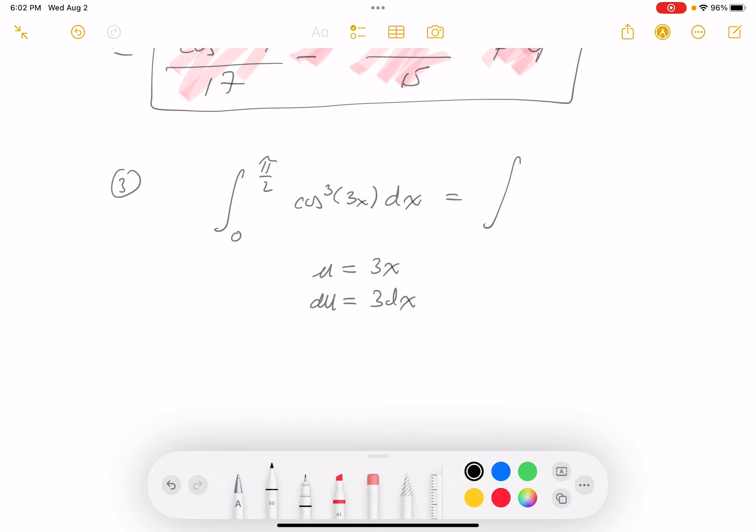So what do you get over here? And this is what's nice about this. If I get a definite integral, I can just move into the land of u now. So if x is 0, u would be 0. And if x is pi over 2, u would be 3 pi over 2.